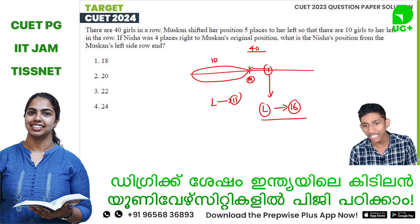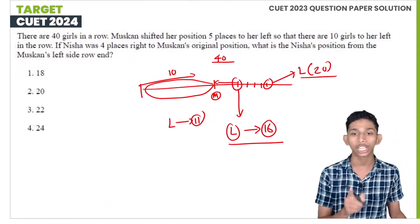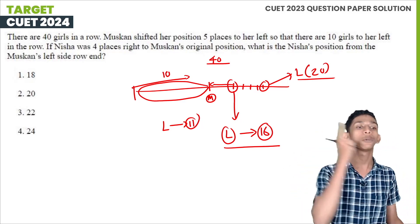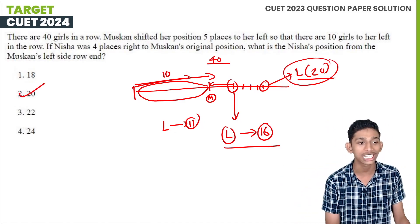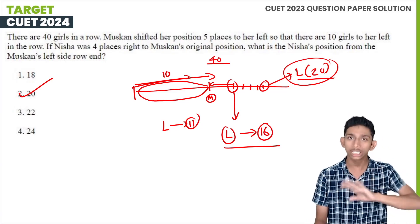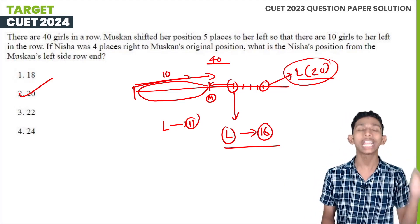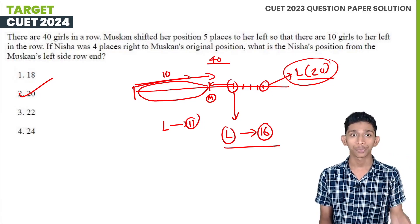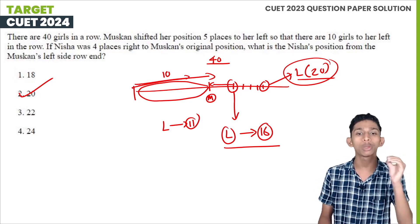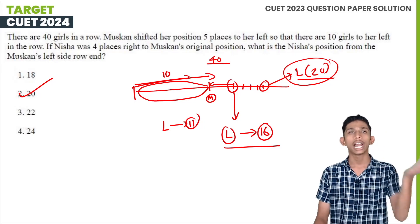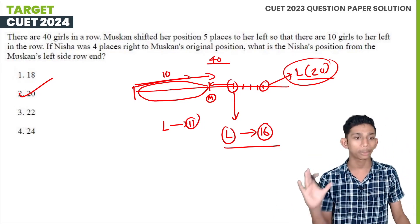That's 4th place to the right — positions 1, 2, 3, 4 to the right of Muskan's original position. Muskan's original position from the left was 16. Moving 4 places to the right means position 16 minus 4 from the left equals 12th, or equivalently, what is Nisha's position from the right? The original position is determined from the left side. The answer follows from this calculation.